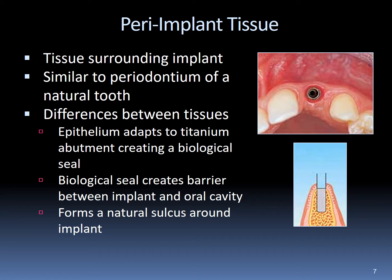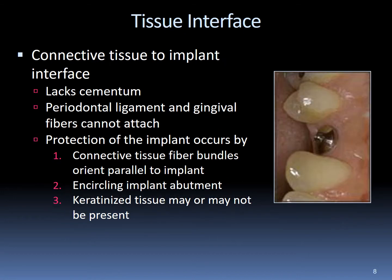The peri-implant tissue surrounds the implant and is similar to the periodontium of a natural tooth. The difference is that the epithelium adapts to the titanium abutment by creating a biological seal, forming a natural sulcus around the implant. The connective tissue creates an interface with the implant. Even though this interface lacks cementum, a periodontal ligament, and gingival fibers, protection still occurs through connective tissue fiber bundles oriented parallel to and circulating the implant's abutment. Keratinization of the tissue may or may not be present in the area.